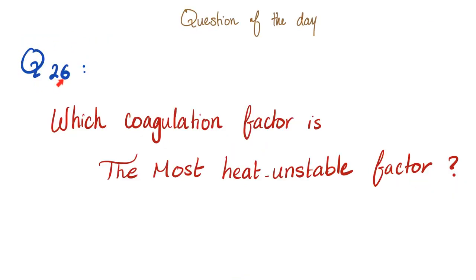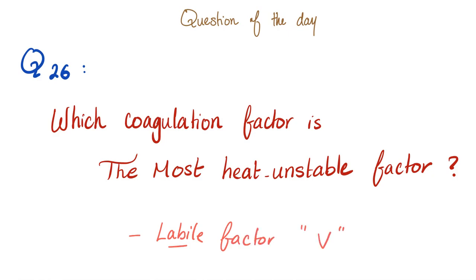Now let me answer the question from the last video: which coagulation factor is the most heat-unstable factor? The answer is it's literally called the labile factor. Factor 5 is the labile factor. Whenever you think of factor 5, remember two unstables: it's unstable on heating, and it's also unstable during storage.